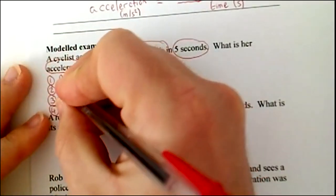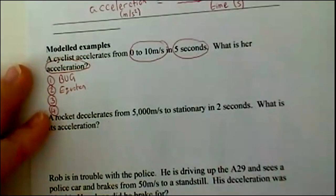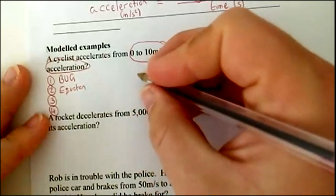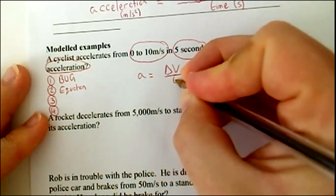Number two, the equation. So, try and do this from memory, but write the equation. I'm going to use the symbols. So, again, acceleration is equal to change in velocity divided by time.